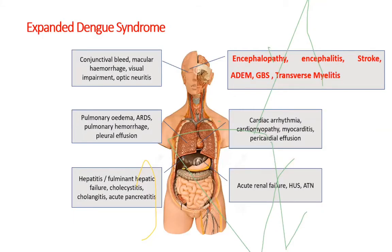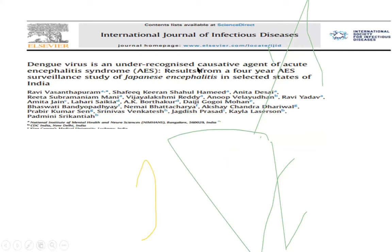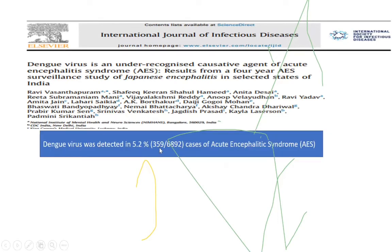Expanded dengue syndrome has been reported in international guidelines, including complications in the form of CNS disease, lung involvement, heart involvement, and hepatosplenic involvement. Dengue virus is an under-recognized causative agent of acute encephalitis syndrome. The most common cause of acute encephalitis syndrome in our country is Japanese encephalitis, but this paper reports that dengue virus was detected in 5% of AES cases. Any patient presenting with such illness should also have dengue encephalitis suspected.